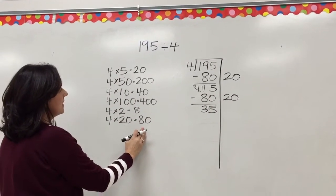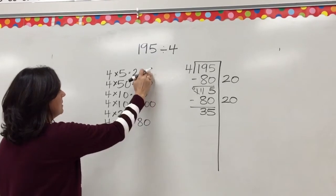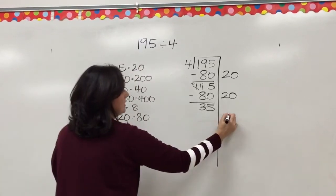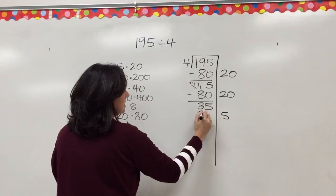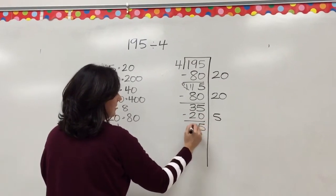We can't use 80 again, but it looks like we could use this one, 5. 5 times 4 gets us 20. And we subtract again.